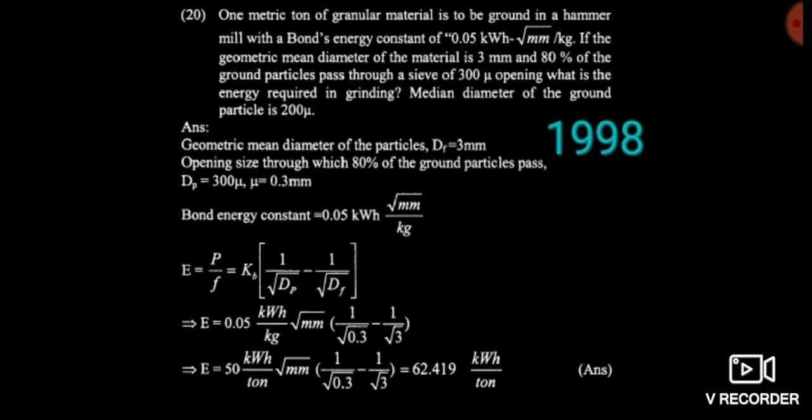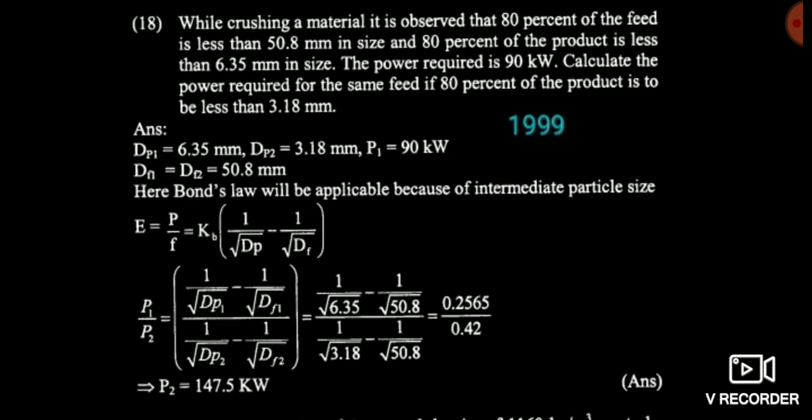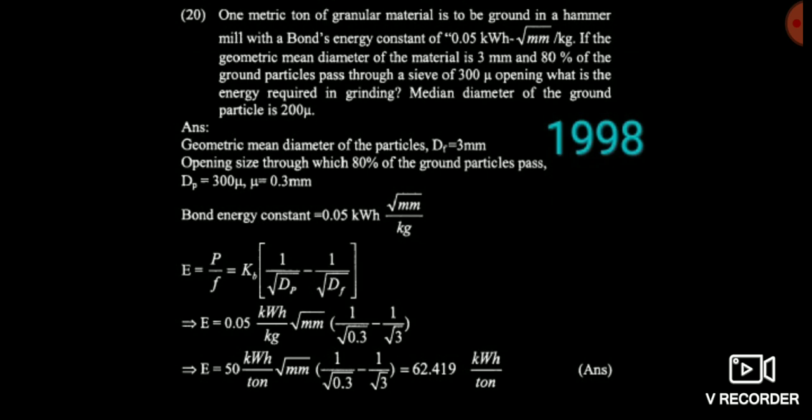Here we calculate the energy, and note that the units of the Bond's constant are kilowatt hour root mm per kg. Since it is a case of one metric ton, the F value is 1, so you don't need to worry about F. One more thing: since it is per kg, when converting the Bond's energy constant into per ton you multiply by 1000. So 0.05 kilowatt hour root mm per kg becomes 50 kilowatt hour root mm per ton.